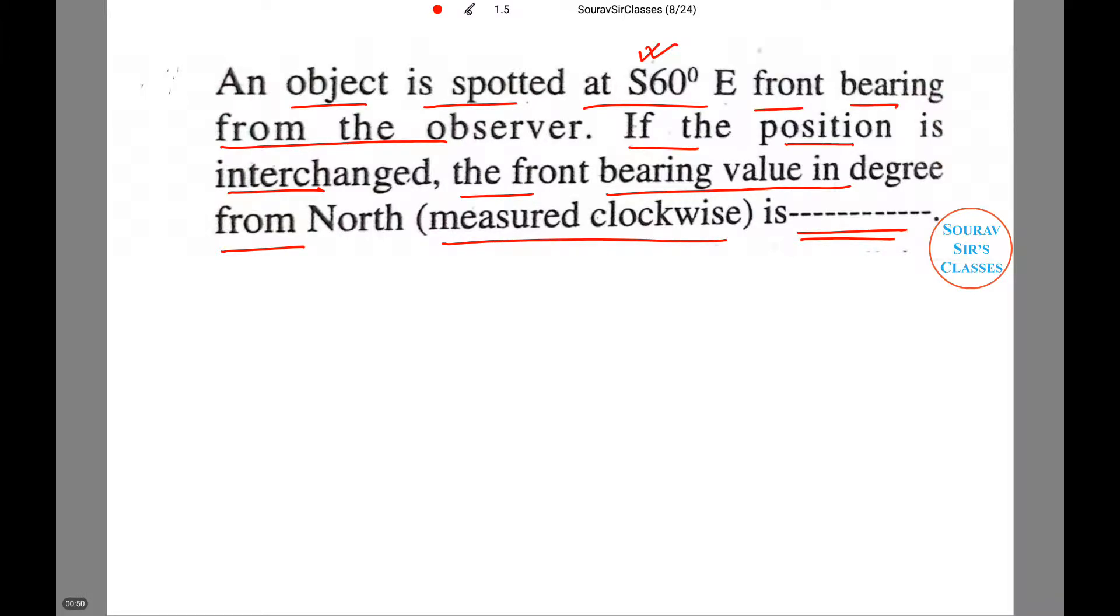Let us do this. Now the bearing spotted from the observer is south 60 degrees east. Now if the position is interchanged, then we have something like this, or the above will be rewritten as this because the position is interchanged.